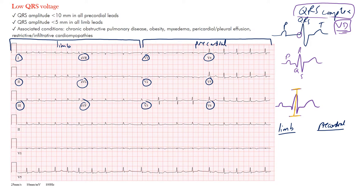In general, to meet low QRS voltage in the limb leads, the amplitude should be less than five millimeters. In the precordial leads it should be less than ten millimeters. That amplitude from top to bottom must be less than five millimeters in all limb leads and less than ten millimeters in all precordial leads.